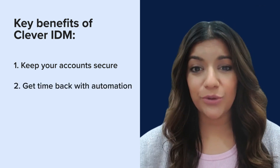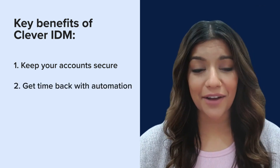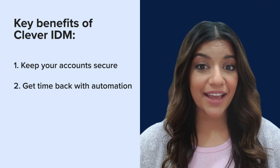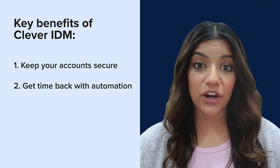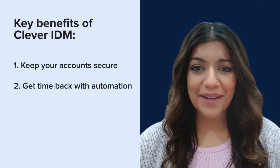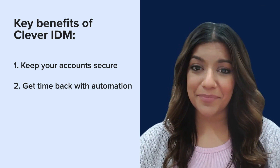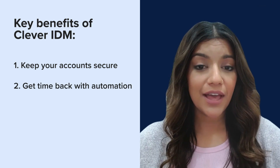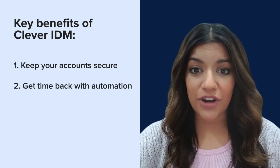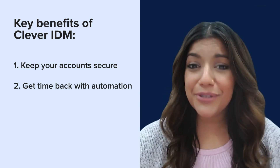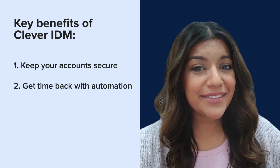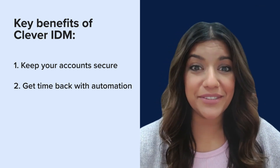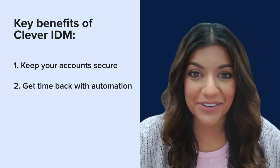With Clever IDM, you get hands-off identity management automation. Using your SIS or HRS data, Clever IDM automatically creates and updates accounts, OUs, and groups in Google, Active Directory, and EntryID so you don't have to. Plus, you can get set up quickly because Clever IDM uses the data you already have in Clever.